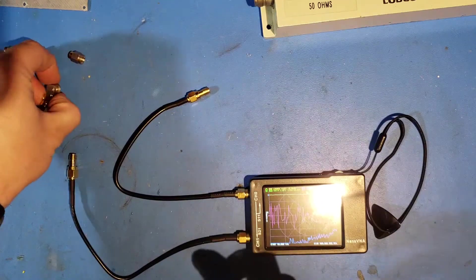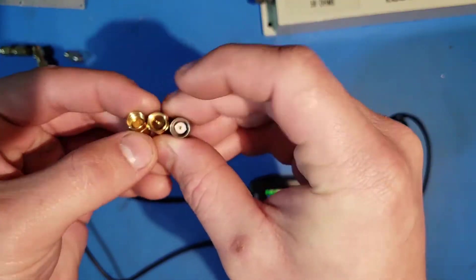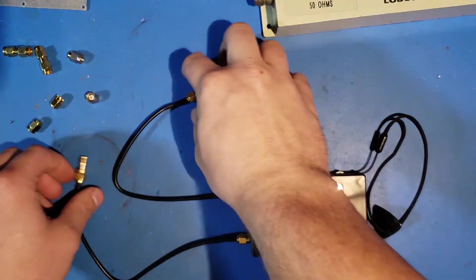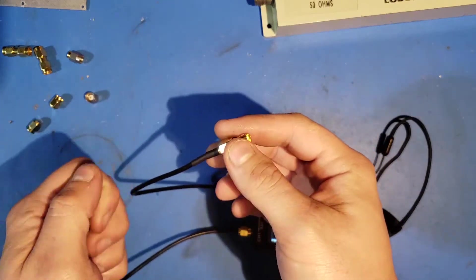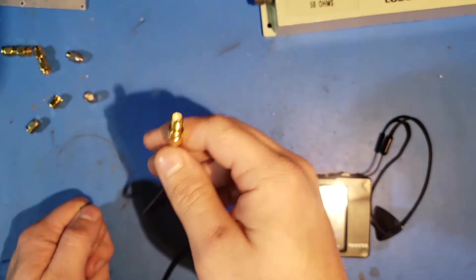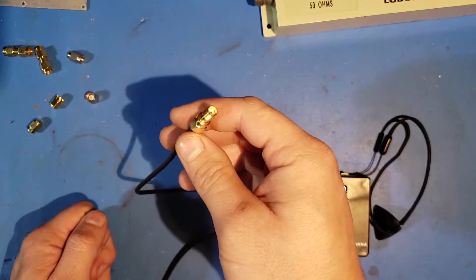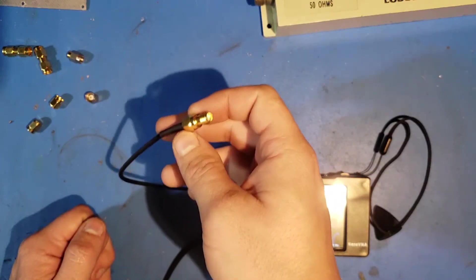The load standards that come with the NanoVNA are male SMA connectors. But the cables that come with the NanoVNA are also male SMA connectors. So you'll have to use an adapter to attach the load standards. The kit comes with one adapter. They intend for that adapter to be used as a through standard and both as an adapter to connect to the standards.